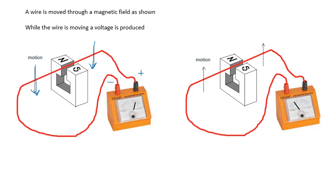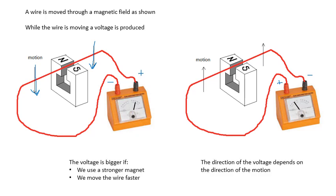If you move the wire upwards, then you get a voltage in the opposite direction. So, the size of the voltage depends on if we use a stronger magnet, you get a bigger voltage. And if you move the wire faster, you will get a bigger voltage. And then the direction of the voltage will depend on the direction of the motion. I should say the direction of the EMF. But it's the same thing.